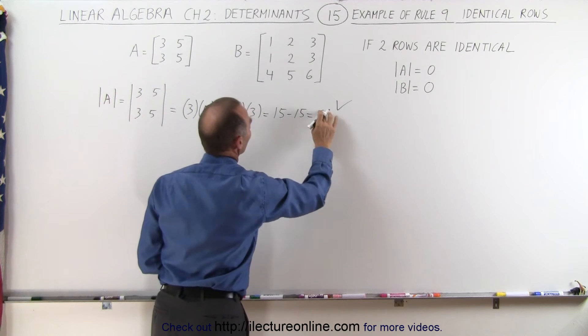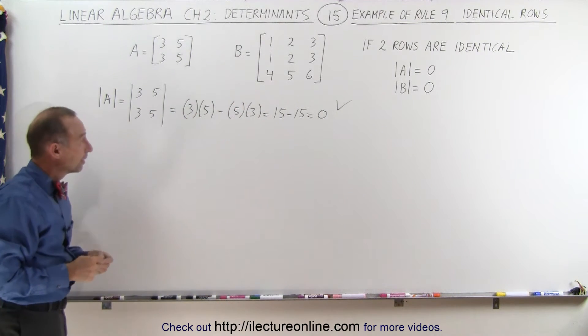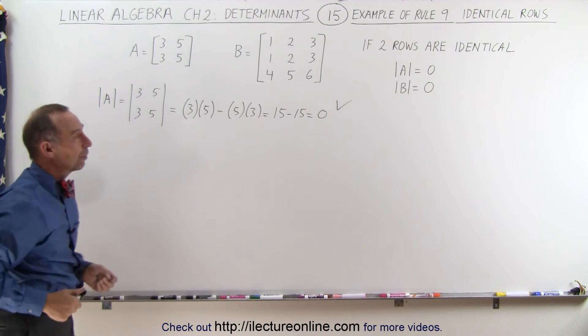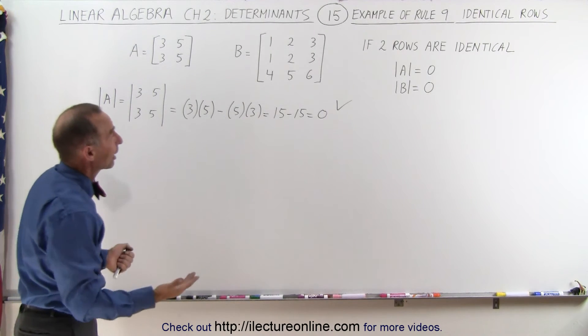You can see then that for a 2 by 2 matrix when those two rows are the same, when you take the determinant of that you get zero. Does it work also for a 3 by 3? Let's take a look.